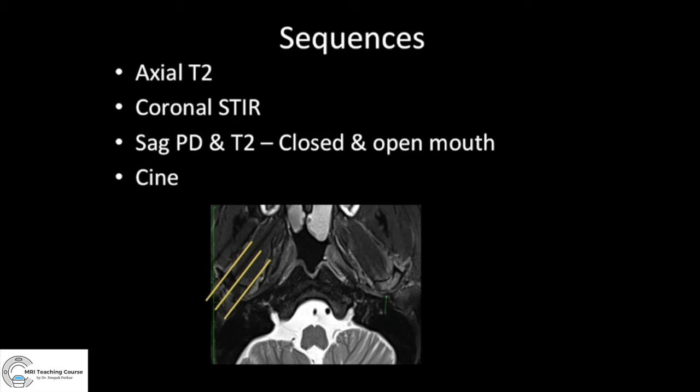The axial image is where you begin, followed by a coronal STIR or, more preferably, a coronal PD to look at the disc. Make sure there is one fat-sat T2 or STIR sequence to look for marrow changes, joint effusion, and adjoining soft tissue. So in any one plane use axial T2 fat-sat or STIR; for other planes, use PD. We obtain coronal PD, and sagittal PD as well as T2 — non-fat-sat. Some people obtain cine images in open mouth to see movement, but we obtain static images in open and closed mouth.